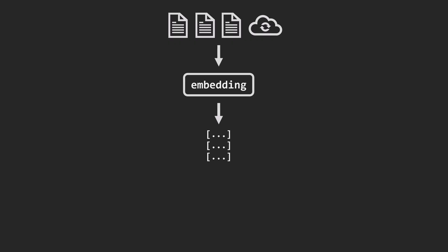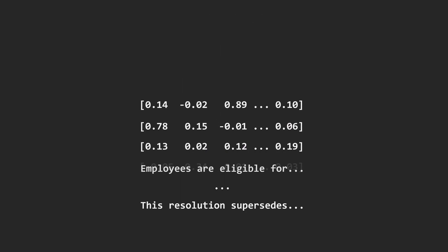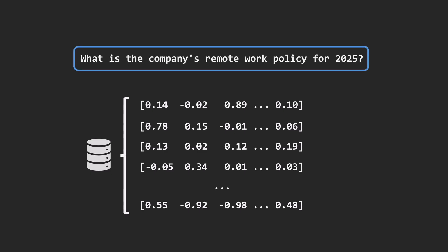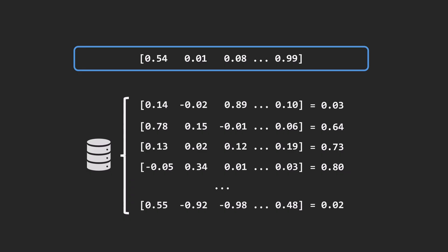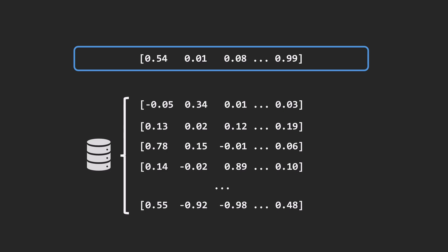We repeat this process for every text chunk in the document and store the resulting vectors in a vector database. Each document or source from the internet is divided into chunks, each chunk is embedded into a dense vector, and each vector is stored alongside the original text it represents. Once we have a vector database and the user submits a query, the query is also converted into a dense vector. The system calculates similarities between this query vector and all vectors in the database, usually using the dot product or cosine similarity. The higher the value, the greater the similarity between the query and the corresponding text chunk. After sorting, the top-k most similar passages are selected as context.